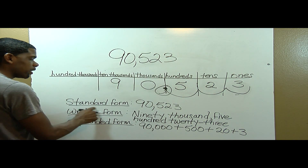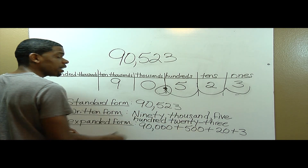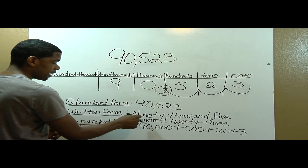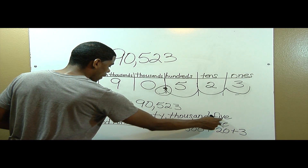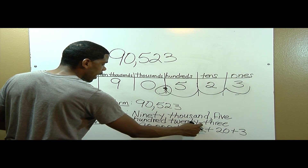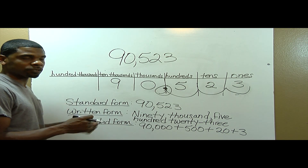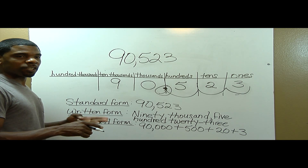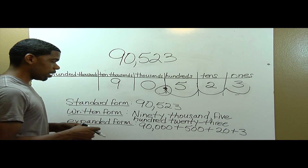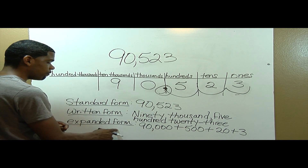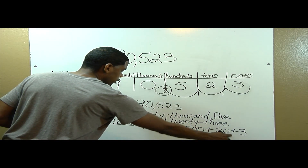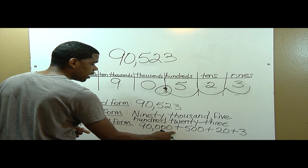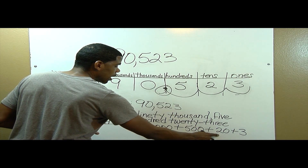In standard form, ninety thousand five hundred twenty-three is the number itself. In written form, we write the number out just the way we say it: ninety thousand, five hundred twenty-three — don't forget your hyphen. Remember, you place a hyphen on any number that's twenty-one and above, with the exception of thirty, forty, fifty — numbers like that, you don't place a hyphen. In expanded form, you use the plus sign to show the number is increasing or expanding: ninety thousand, plus five hundred, plus twenty, plus three.